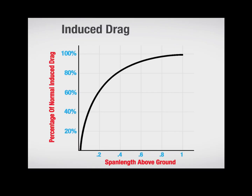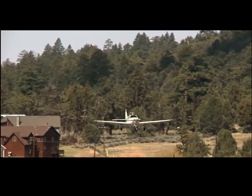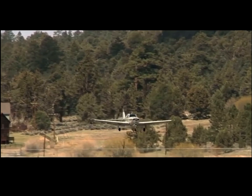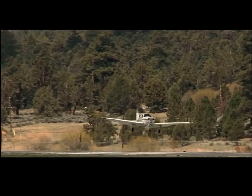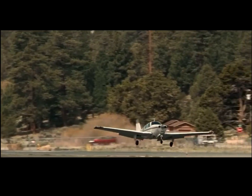This chart shows you the percentage of induced drag the aircraft will have as you get close to the runway. The closer you are to touchdown, the less induced drag you will experience — this is what we call ground effect. This decreasing drag will increase the speed of the air through the wings, and you will feel a boosting lift that allows the aircraft to smoothly settle onto the runway.